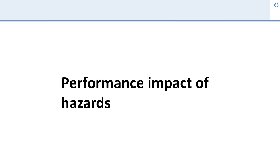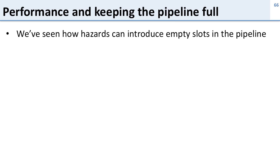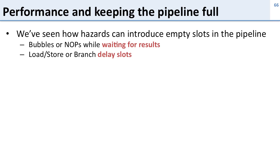Now that we've talked about the three different types of hazards, let's talk about the performance impact they have. Performance is about keeping the pipeline full in a pipeline processor, and we've seen how hazards can introduce empty slots in the pipeline. We can have bubbles or no-ops when we're waiting for results. The load, store, and branch delay slots can force us to have bubbles if we can't find instructions to put in them, and we can have bubbles while we're waiting for resources.